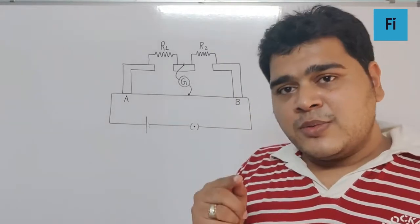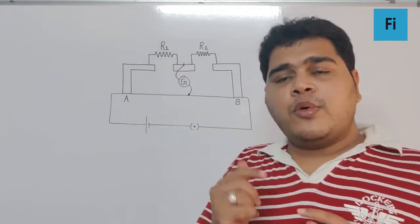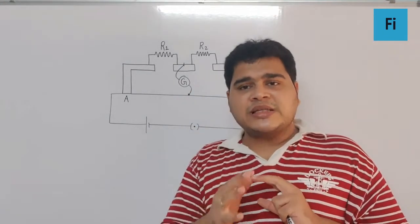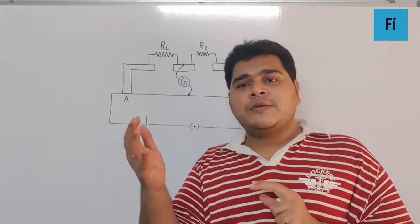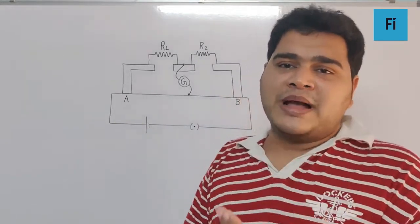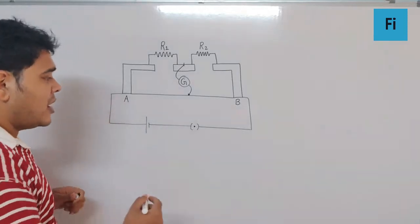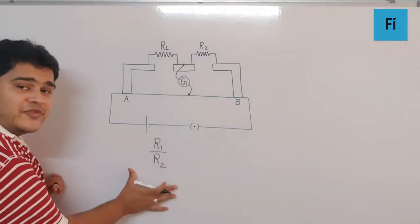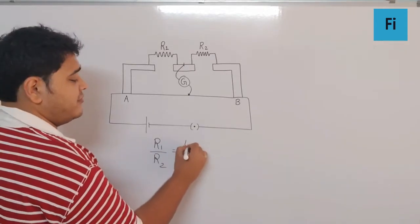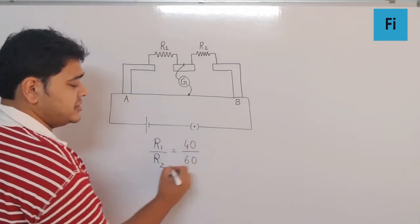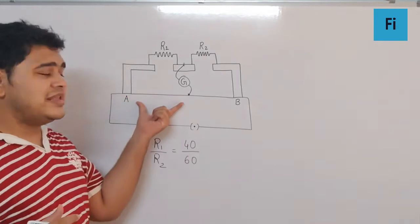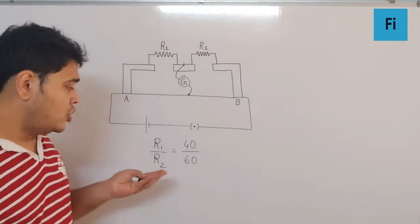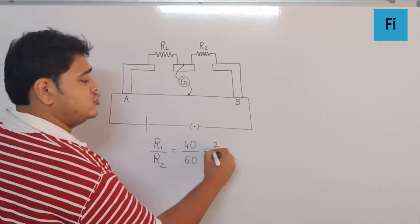We want R1 to be connected with 10 ohm, and then R1 plus 10 to be connected in parallel with something such that we get R1 back. So for the first case, R1 by R2 was 40 upon 60, because 40 was the balancing length and the total has to be 100, so 100 minus 40 is 60. We get this as 2 by 3.